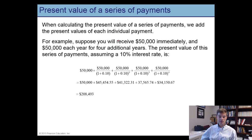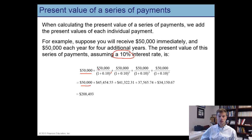The first payment of fifty thousand dollars is received in the present, so its present value is fifty thousand — no discounting because it's received in the present. The second payment of fifty thousand dollars is received one year into the future, so we divide it by one plus the interest rate raised to the first power. Assuming an interest rate of ten percent, fifty thousand divided by 1.1 is forty-five thousand, four hundred fifty-four dollars and fifty-five cents.